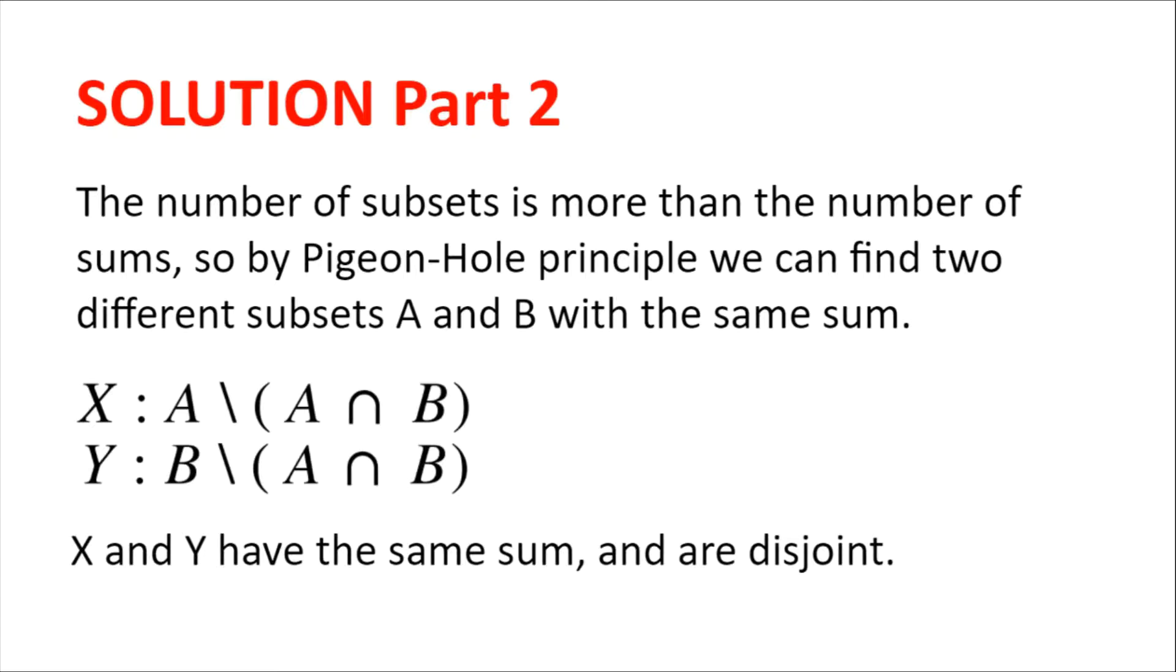So now, X and Y have the same sum, because A and B have the same sum, and A intersection B is the same as A intersection B. And we know they're both disjoint, because we have gotten rid of the intersection.